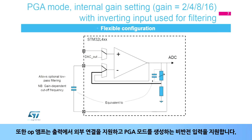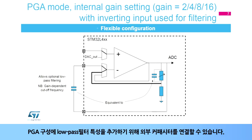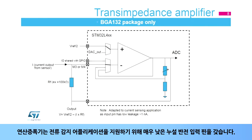The op-amps also support external connections on outputs and the non-inverting input to create the PGA mode. This enables the connection of an external capacitor to add low-pass filter characteristics to the PGA configuration. The op-amps have a very low leakage inverting input pin to support the current sensing application.